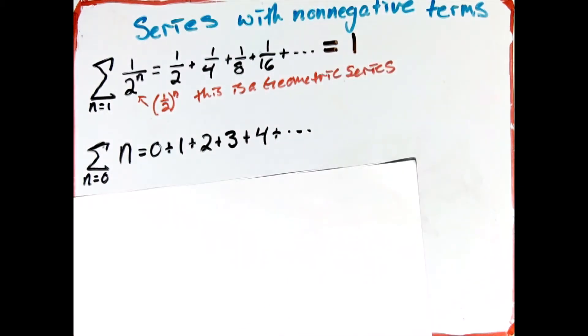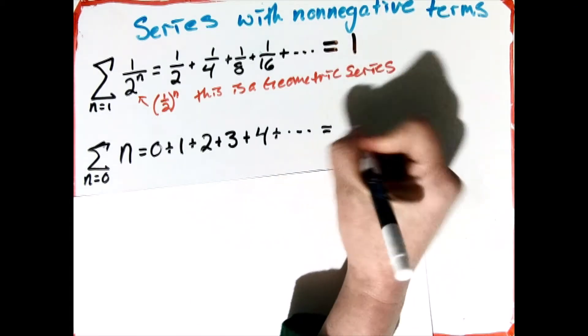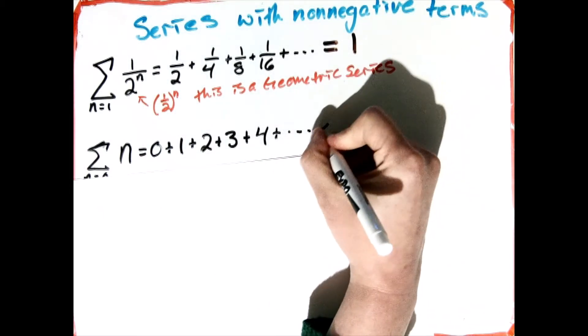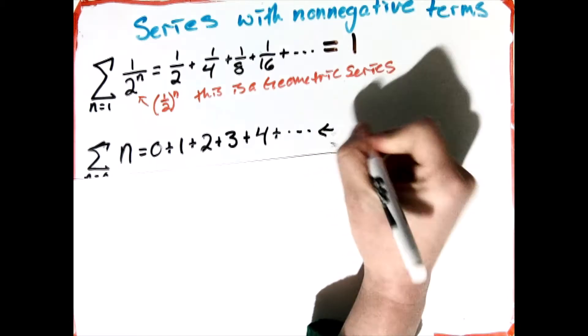So here I've got the terms 0 plus 1 plus 2 plus 3 plus 4, and this is going to diverge.